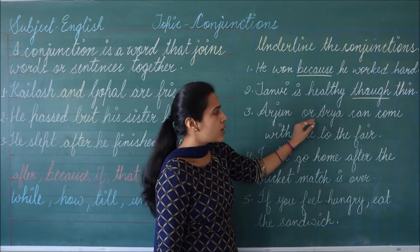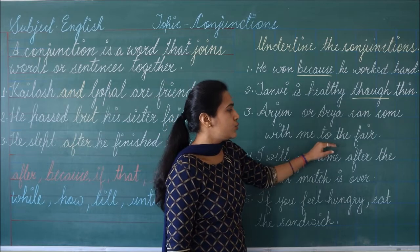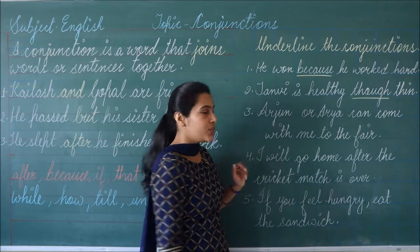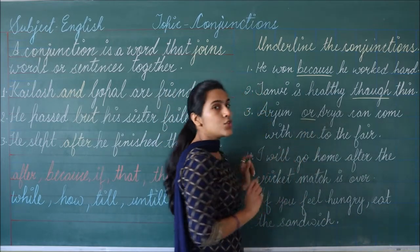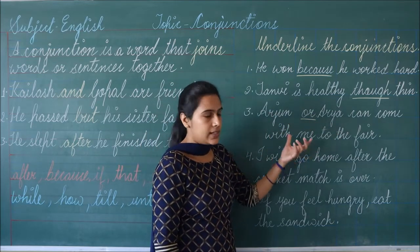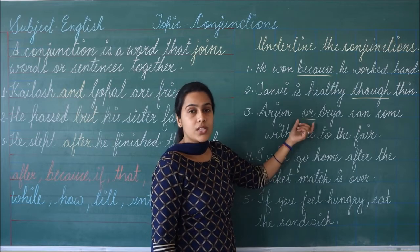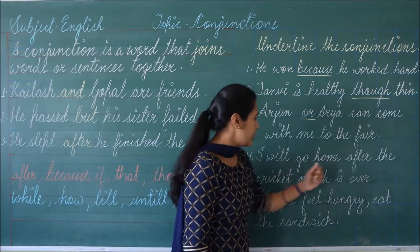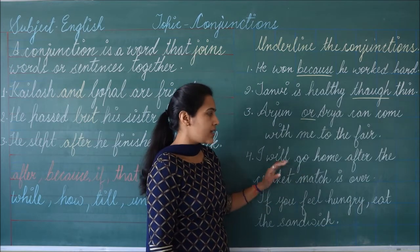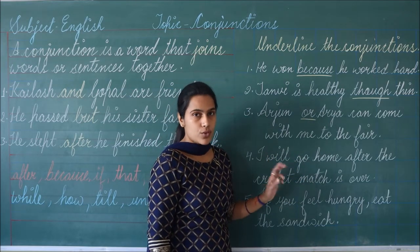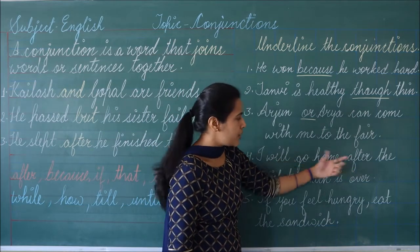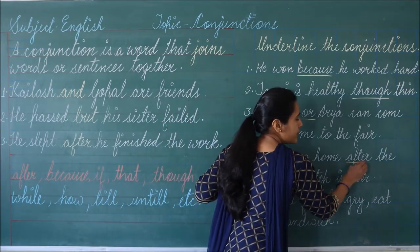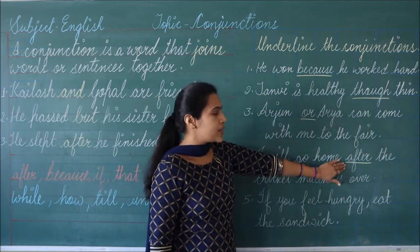Third one: Arjun or Arya can come with me to the fair. Arjun या Arya में से कोई भी एक मेरे साथ आ सकता है. In this sentence we are using the word 'or' to give a choice — हम Arjun और Arya में choice देने के लिए 'or' word का use कर रहे हैं. तो यह भी हमारा conjunction है. Fourth one: I will go home after the cricket match is over. मैं घर तब जाऊँगा जब cricket match over हो जाएगा. We are using the word 'after' to join our first sentence to the second sentence — so the word 'after' is our conjunction.